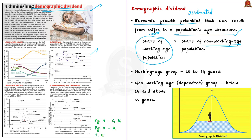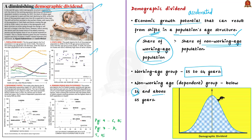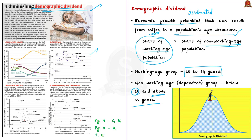Working age population refers to people in the age group of 15 to 64 years. The remaining — those below 14 years and above 65 years — are the non-working age population, also known as the dependent population.